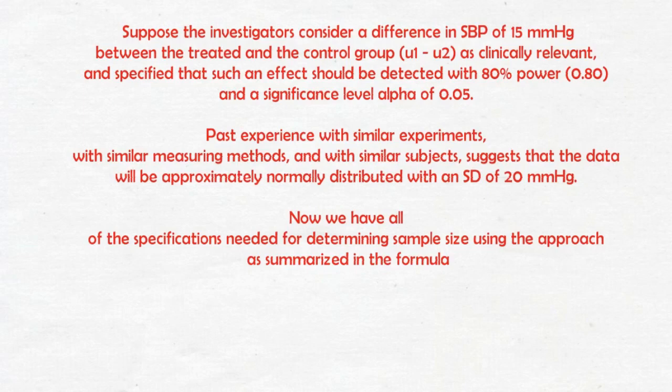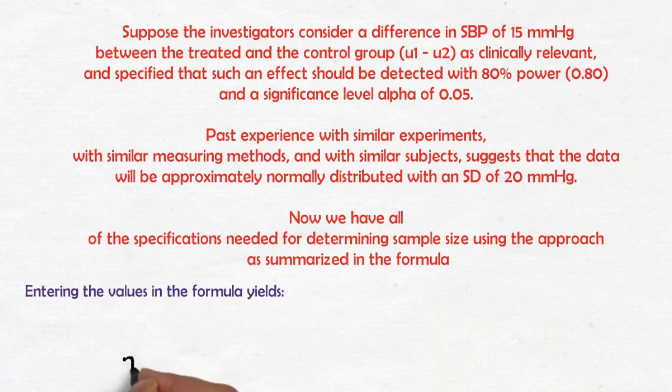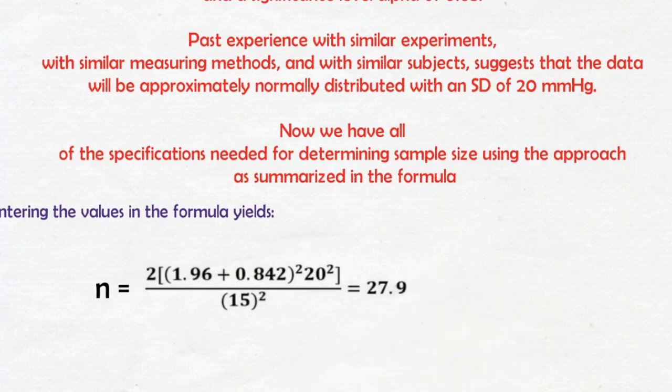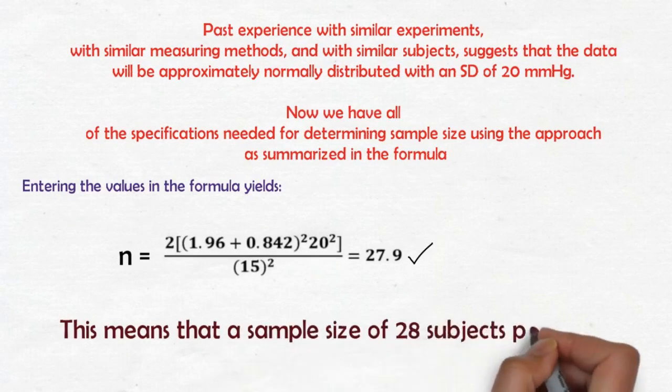Entering the values in the formula yields n equals [calculation], which gives us 27.9. This means that a sample size of 28 subjects per group is needed to answer the research question.